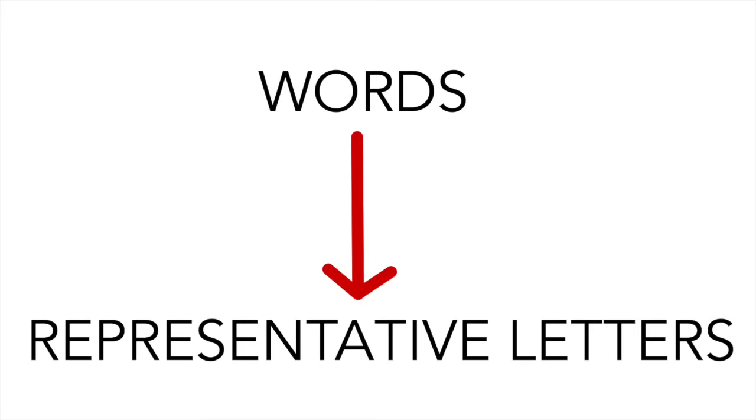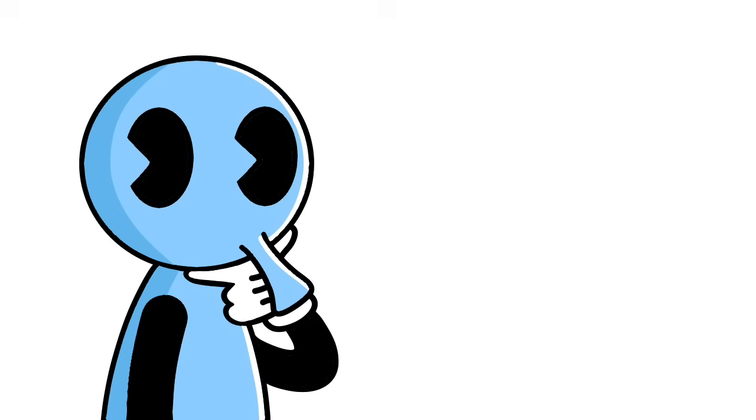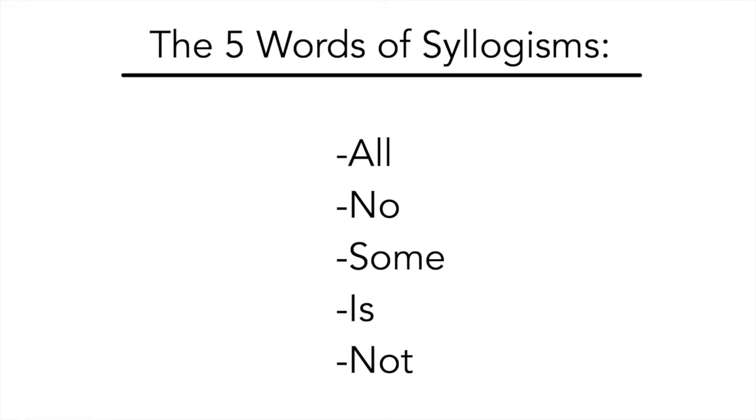The thing is, though, when working with logic, you're probably not going to be dealing with full words, but rather letters that represent a word. Usually, you just substitute the word for the first letter. So instead of all men are mortal, you'd put all M is O, with O representing mortal, because we already have an M. But wait, why are we saying all M is O instead of all M are O? Well, that's because there's specific language used for syllogisms. Specifically, there are five words used in these sentences. Those words are all, no, some, is, and not.